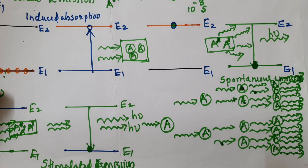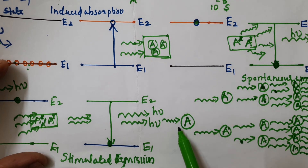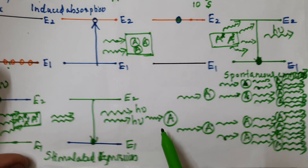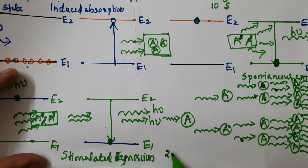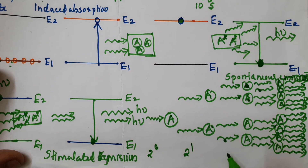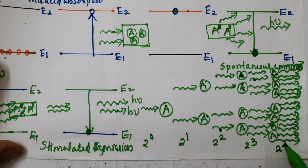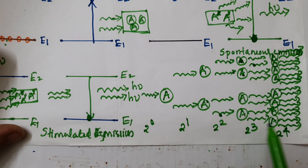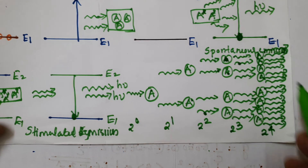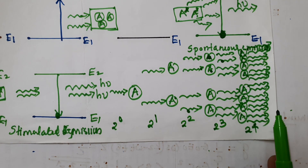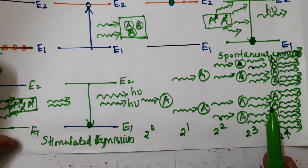We can consider the number of photons emitted: here 1, here 2, here 4, here 8, here 16. This can be represented as 2 raised to 0, 2 raised to 1, 2 raised to 2, 2 raised to 3, 2 raised to 4 — that is the exponential multiplication of photons. The final output will be a highly coherent, highly intensive, and highly directional wave — that is laser.